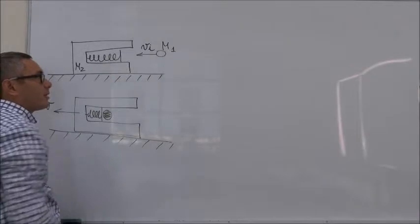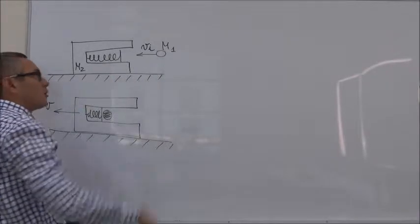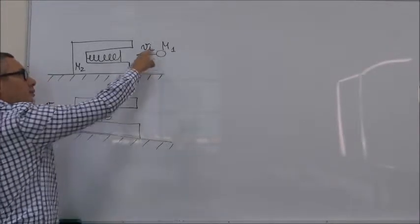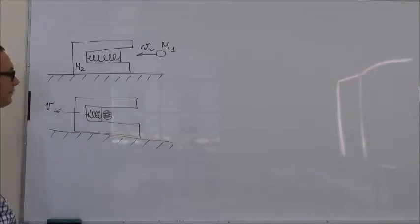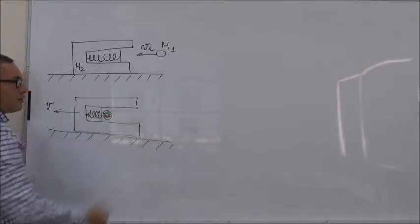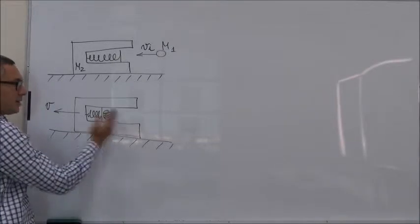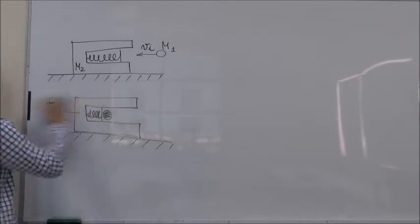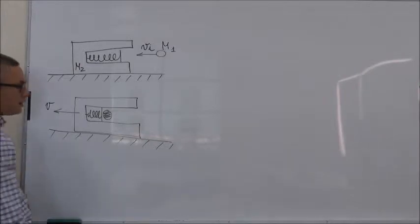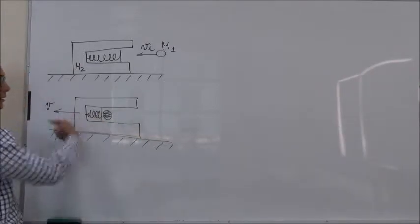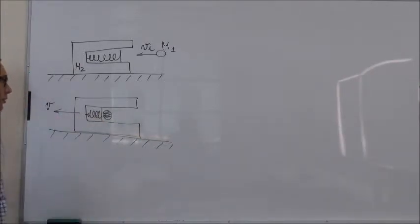Then there is a ball of mass M1 which is going towards the gun with the velocity V initial. So after the ball enters the gun, it compresses the spring and at the same time the whole barrel with the ball inside start moving with the velocity V. So that's the statement of the problem.